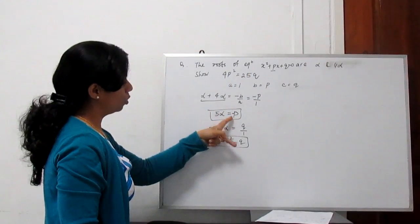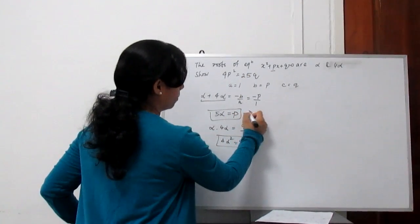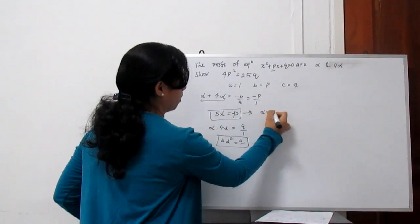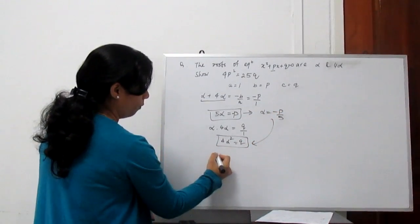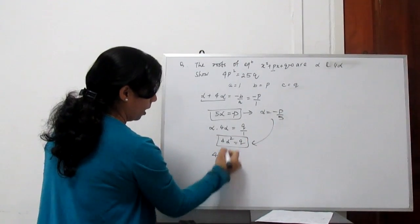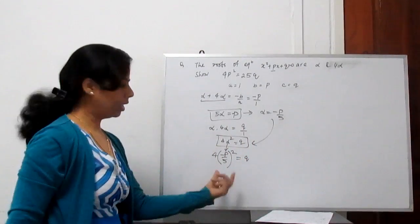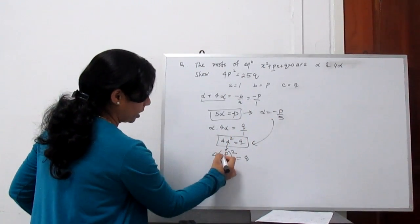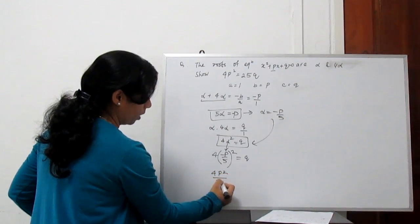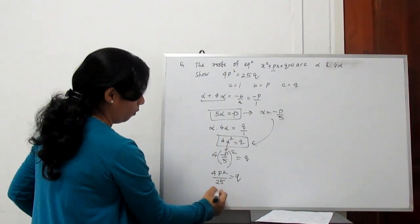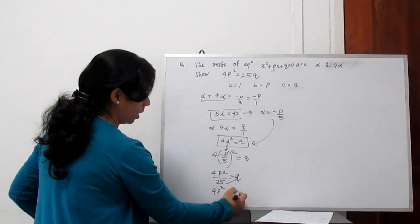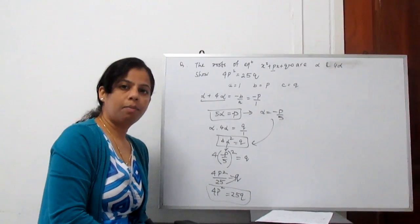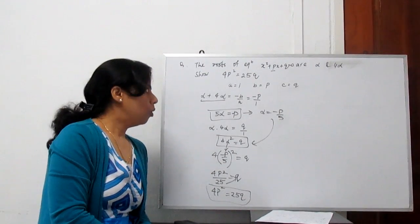Now we need to find one relation between p and q using both equations. From 5 alpha equals minus p, we get alpha equals minus p by 5. Substituting into 4 alpha² equals q: 4 times (minus p by 5)² equals q, which gives 4p² by 25 equals q. Rearranging, we get 4p² equals 25q — which is what we needed to show.